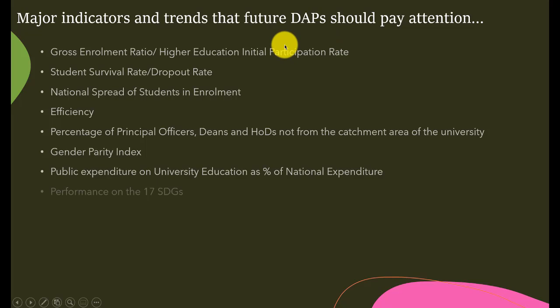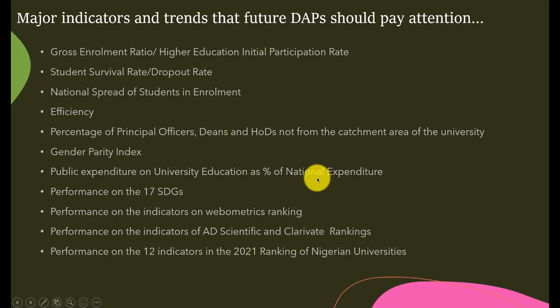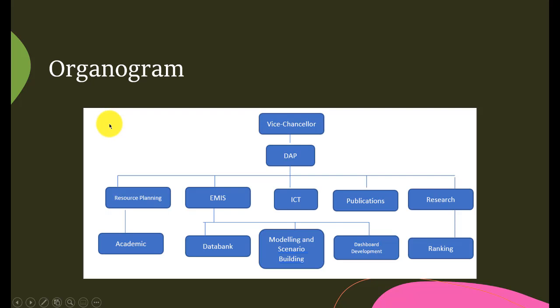What indicators should future DAPs pay attention to? These include: gross enrollment ratio, higher education initial participation rate, student survival rate, dropout rate, national spread of students in enrollment, enrollment efficiency, percentage of principal officers, deans and HODs not from the catchment area of the university — we are turning our universities into village schools — gender parity index, public expenditure on university education, percentage of national expenditure, performance on the 17 SDGs, performance on Webometrics ranking indicators, performance on AD Scientific and Clarivate rankings, and performance on the 12 indicators in the 2021 ranking of Nigerian universities.